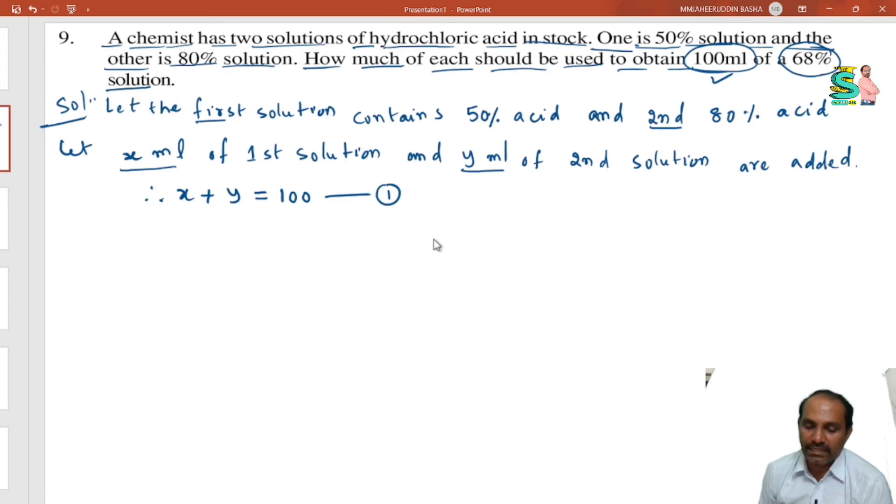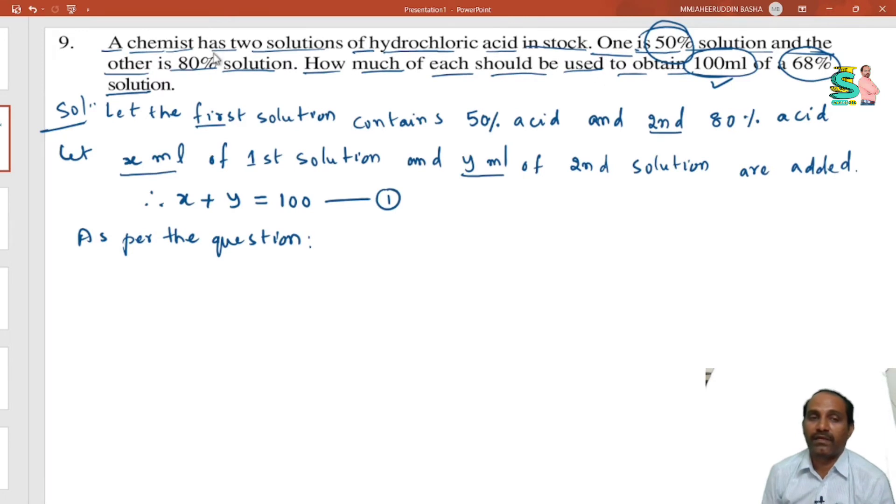Now, acid contained in the first mix is 50 percent and in second one is 80 percent. So, as per the question, what given in the question? 50 percent in first solution, 80 percent in second solution.